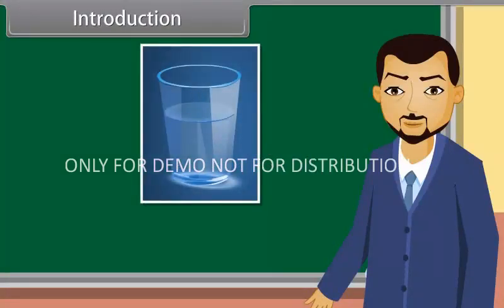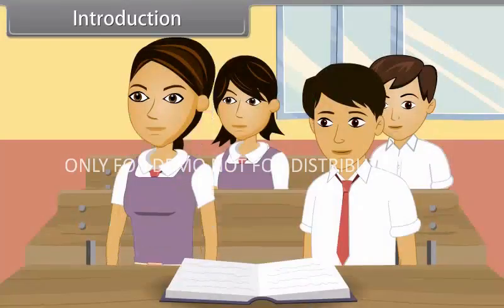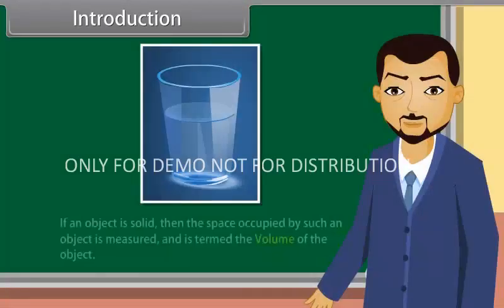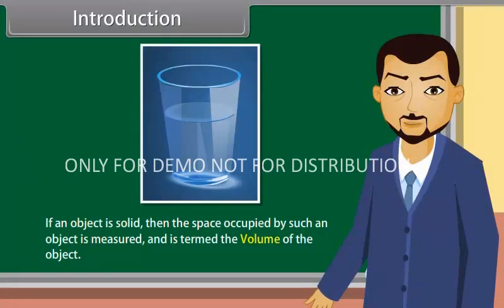This is a glass which is half filled with water. We can easily measure the capacity of the glass or volume of water which is contained by the glass. If an object is solid, then the space occupied by such an object is measured and is termed as the volume of the object. Come, I will teach you more about volume today.